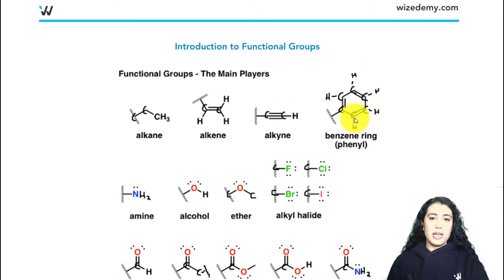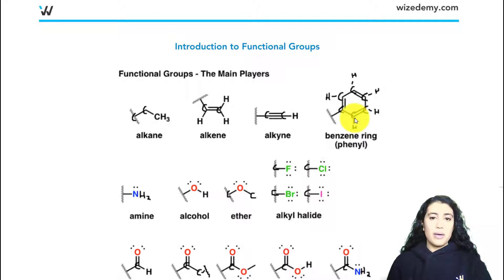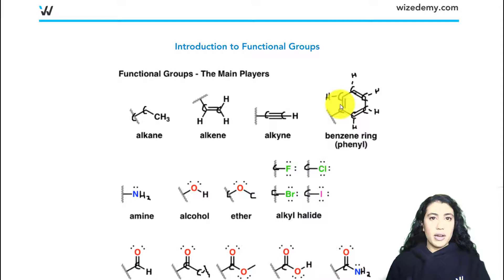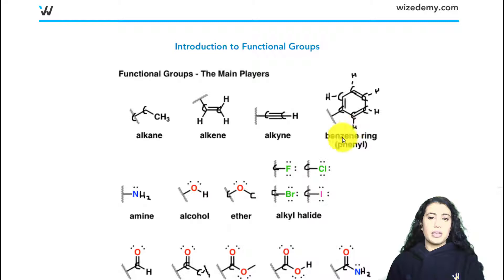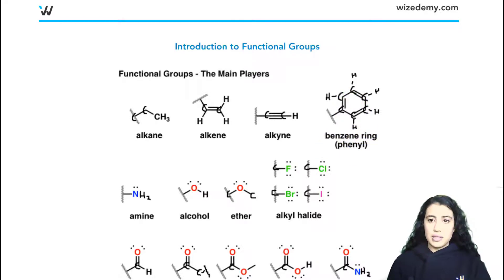Another type of hydrocarbon is a benzene ring. This is a specific group where six carbons are bound in a ring, but it's not just any regular ring — we also see these bonds here. For a benzene ring specifically, these have resonance, so this double bond can push down here, this double bond can push down here, this double bond can push down there.